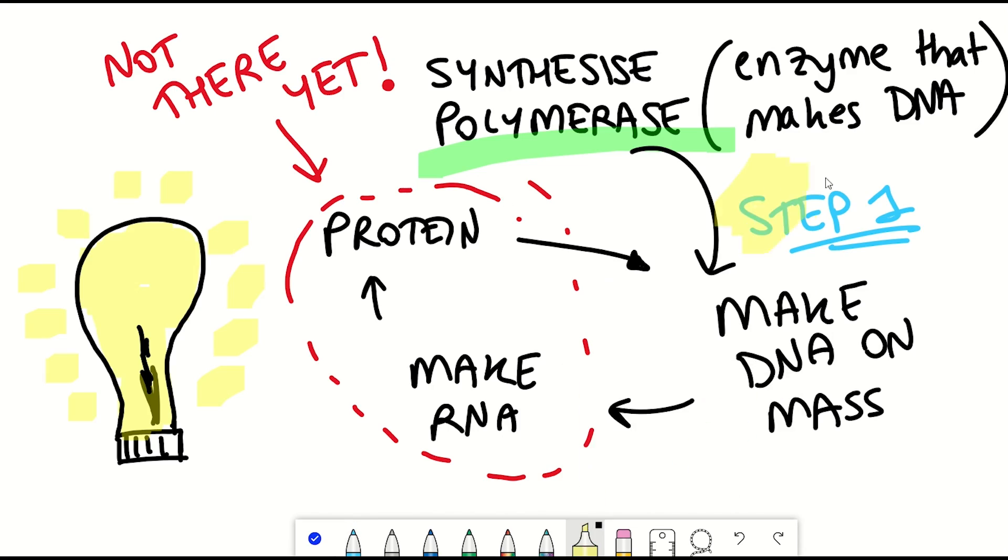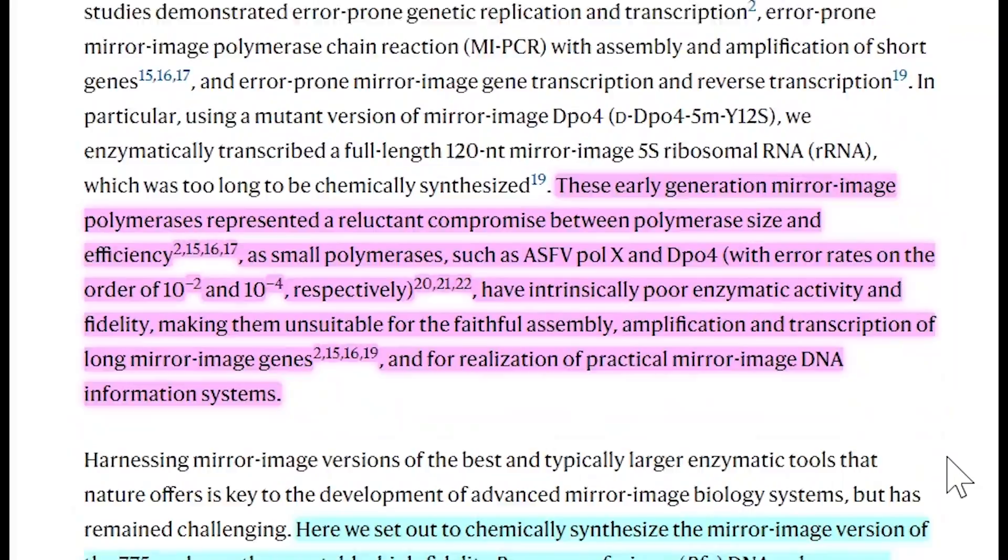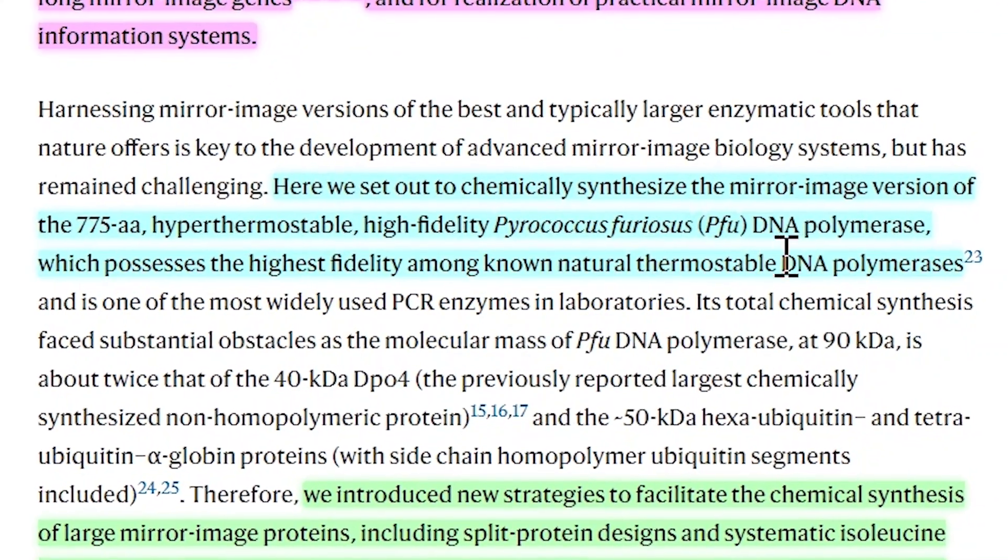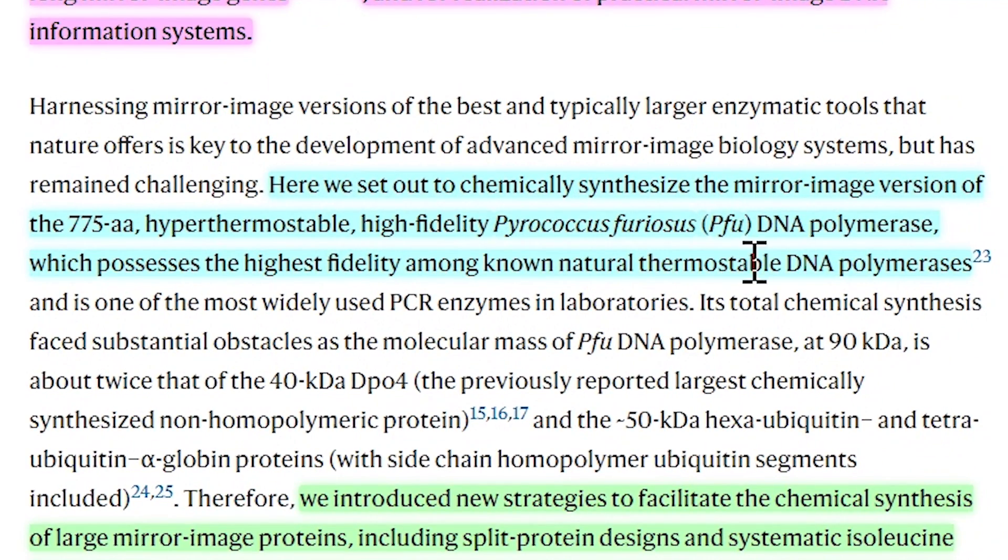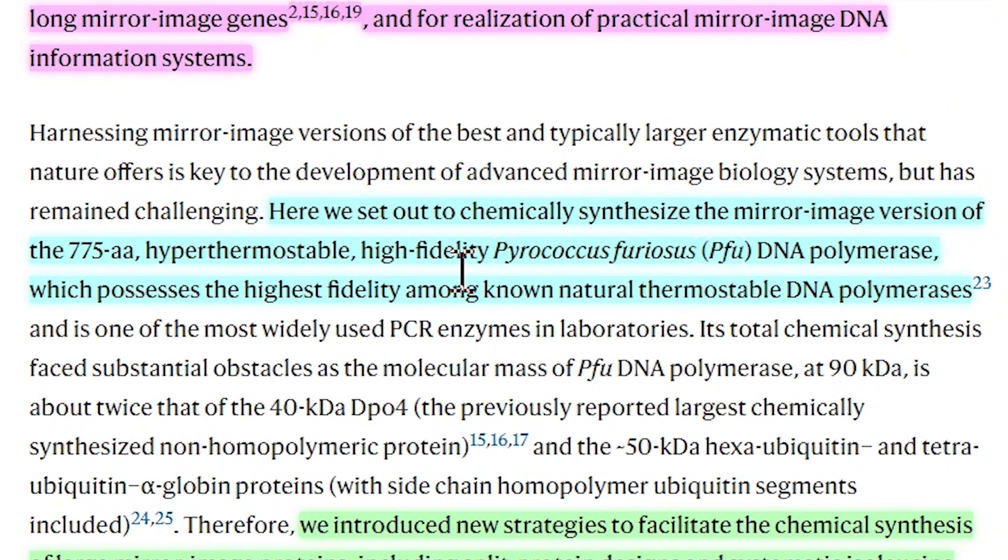So what they wanted to do was to chemically synthesize the mirror image version of the 775 amino acid, hyperthermostable, high fidelity DNA polymerase. And this is from the species Pyrococcus furiosus. And so the L version of this polymerase is commonly used in the lab, especially in PCR reactions. So it's a way to amplify DNA. And so it's basically a very useful tool to have in molecular biology.